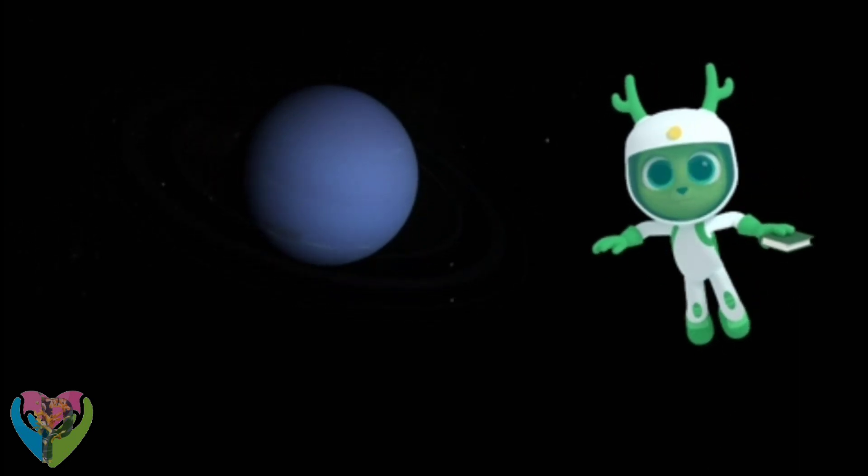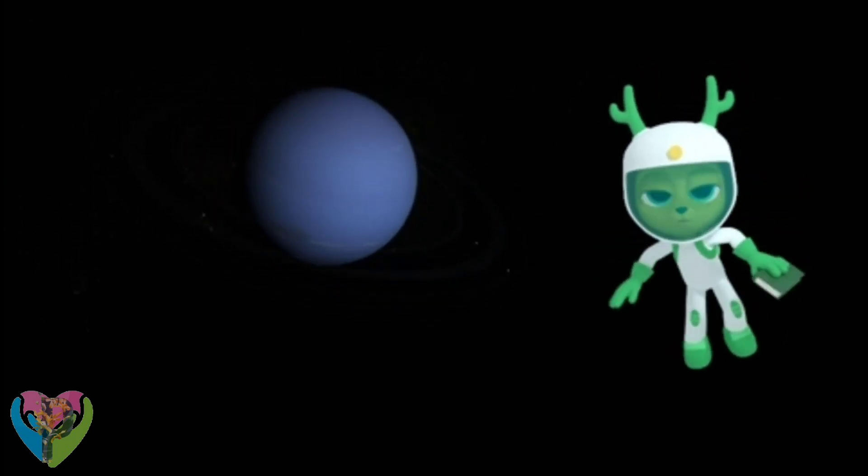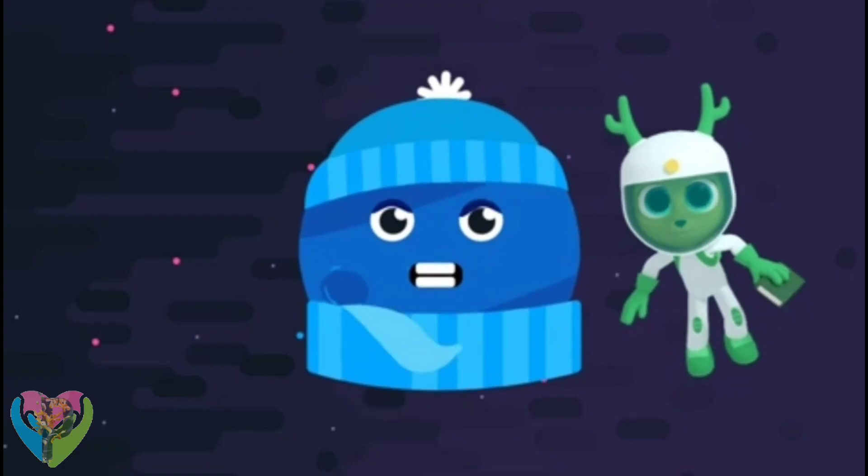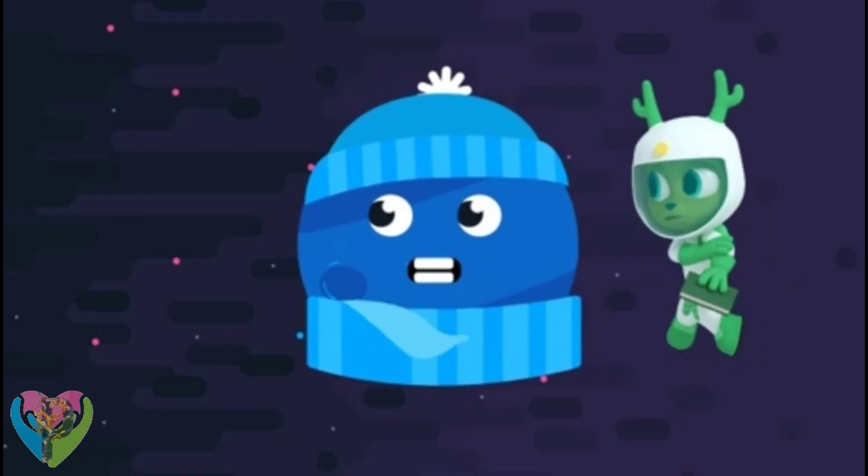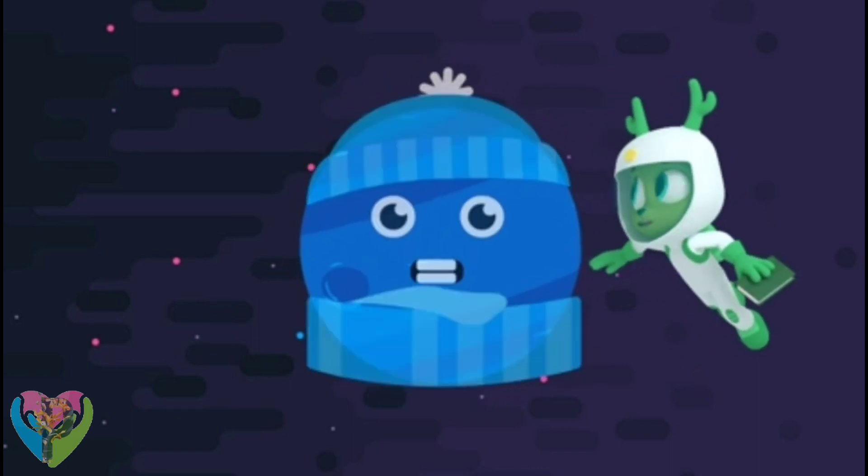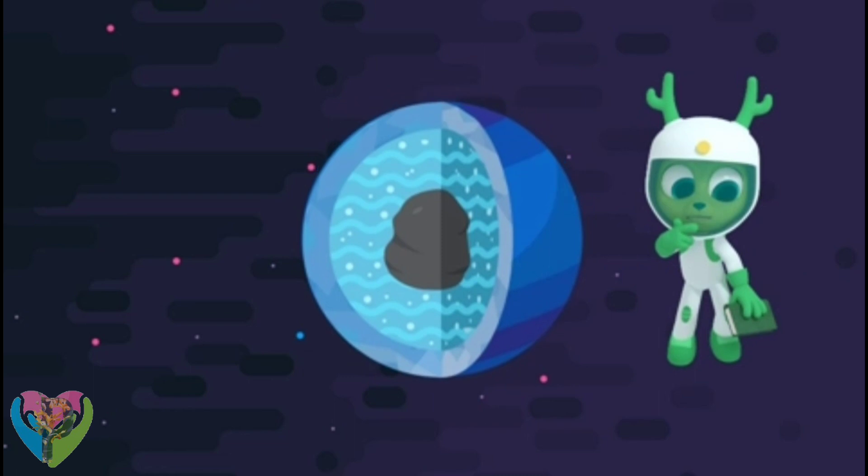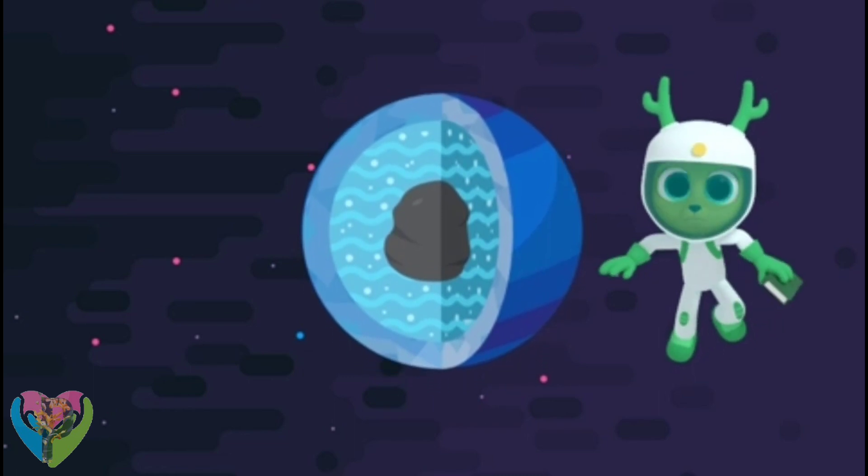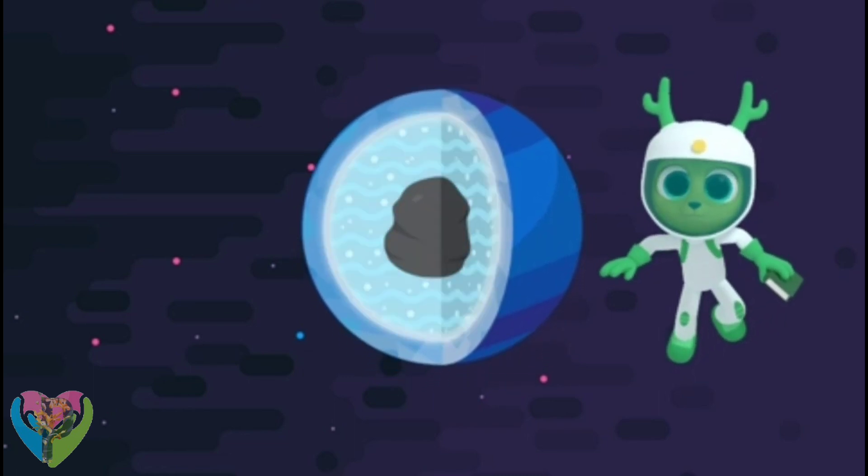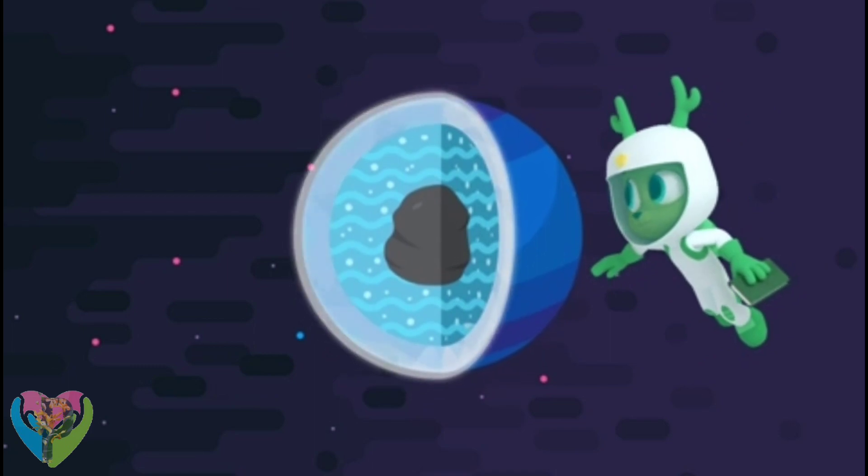You might get a bit distracted on Neptune, Chester. Why? It's a very cold planet with strong winds and raging storms. It's what's called an ice giant. Ice giant? That means it's made of rock and ice with slushy, icy liquid on the surface.